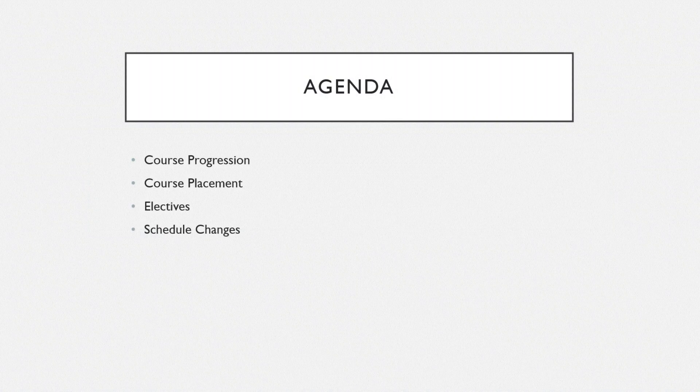I'm going to go through our agenda for today. Our agenda consists of: first, course progression — that is how students move from one year to the next and the courses they have to take in order. We'll talk about course placement, electives, and then a short note about schedule changes.